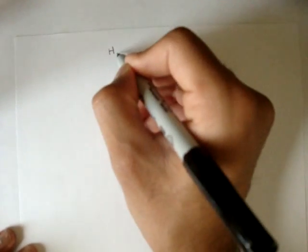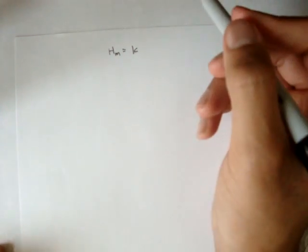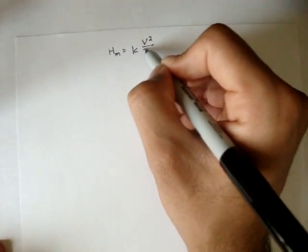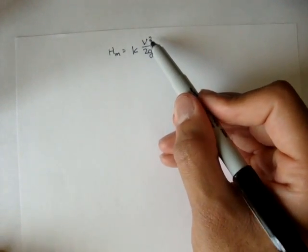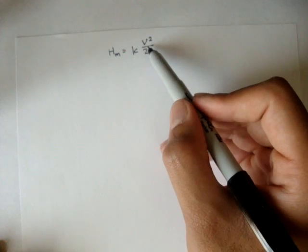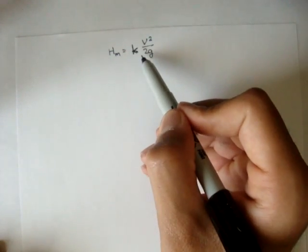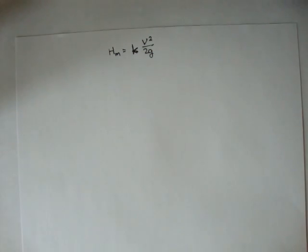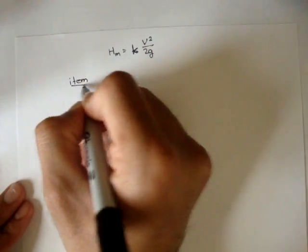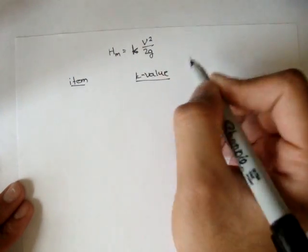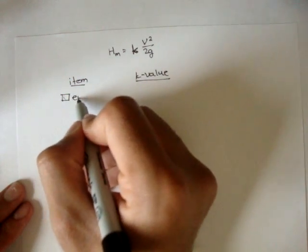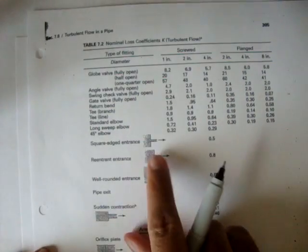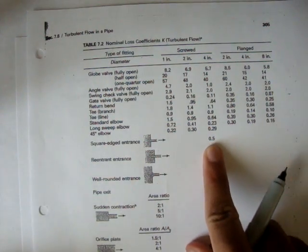And remember, our minor loss - we denote HM is equal to the minor loss coefficient times the average velocity squared over 2g. And since the velocity throughout the entire system is the same, and gravity is the same, we can factor this out and add up all the k values for the minor devices, add them all up, and then multiply that total by the v squared over 2g. So the very first - I'll split this up into item and then k value. Our first item is a squared entrance, and if we check on the chart, the squared entrance has a value k equals 0.5.